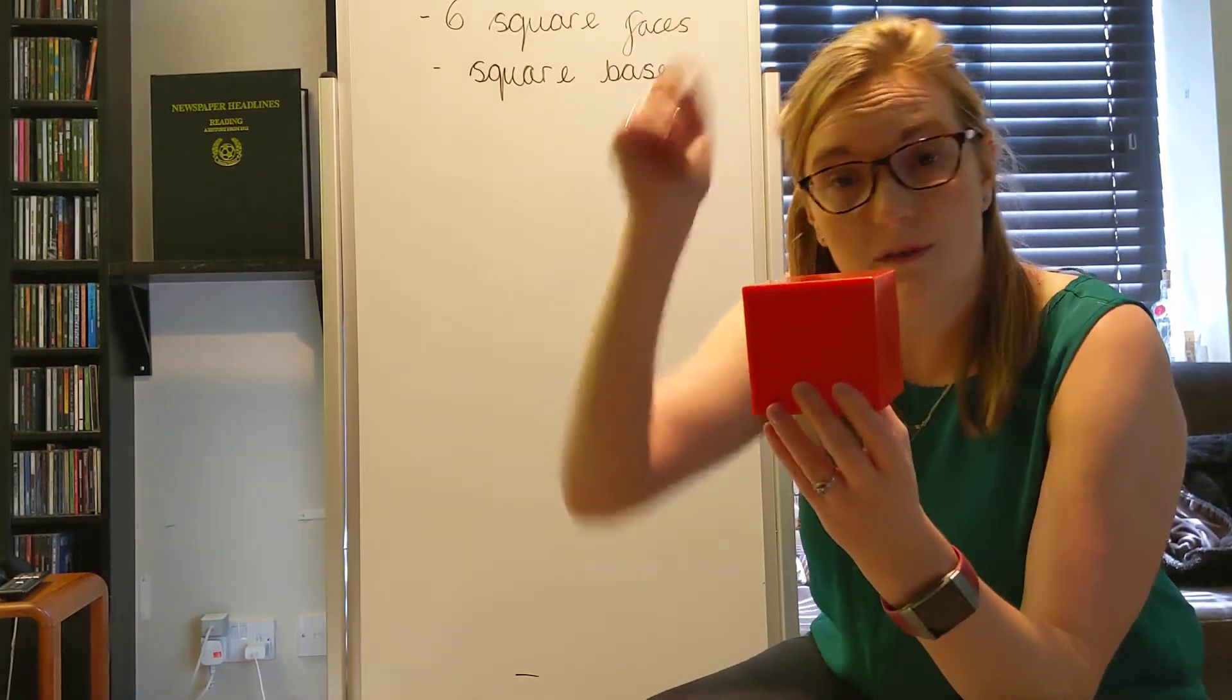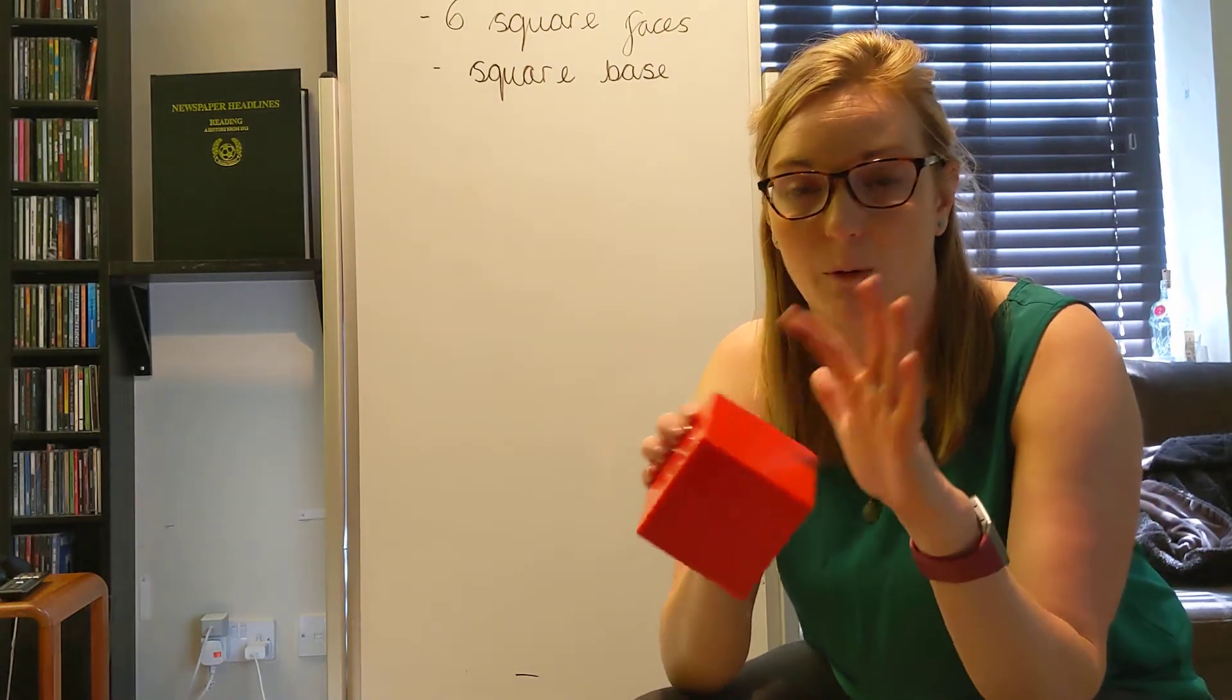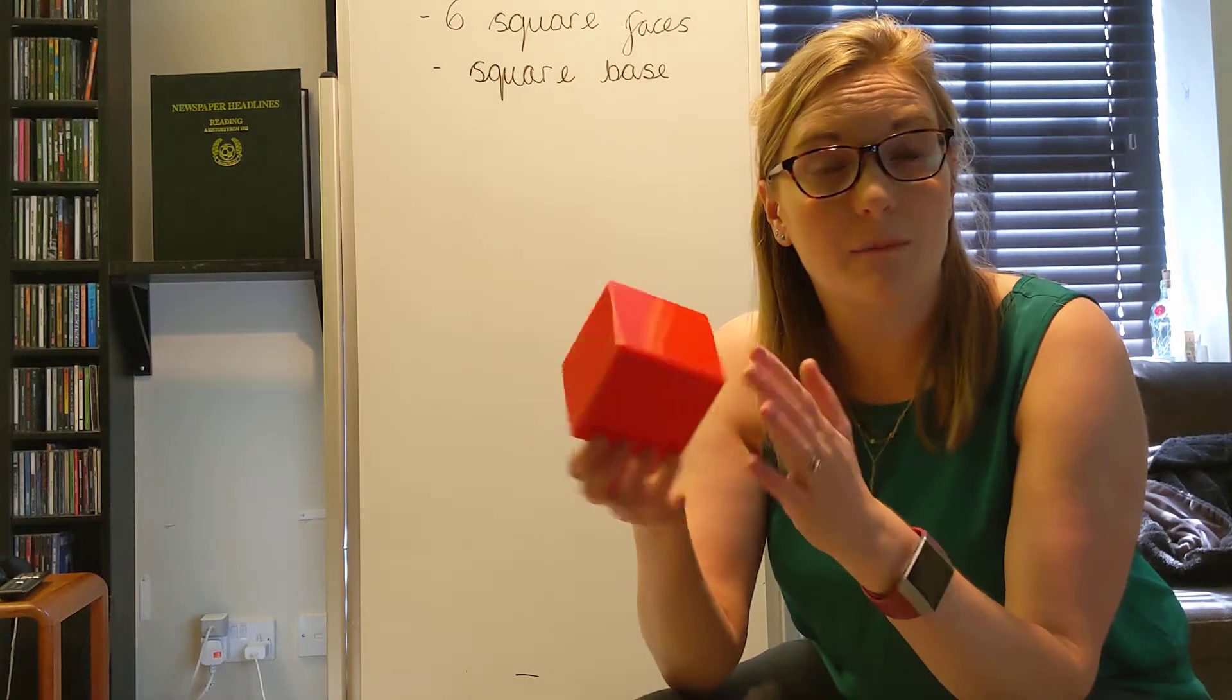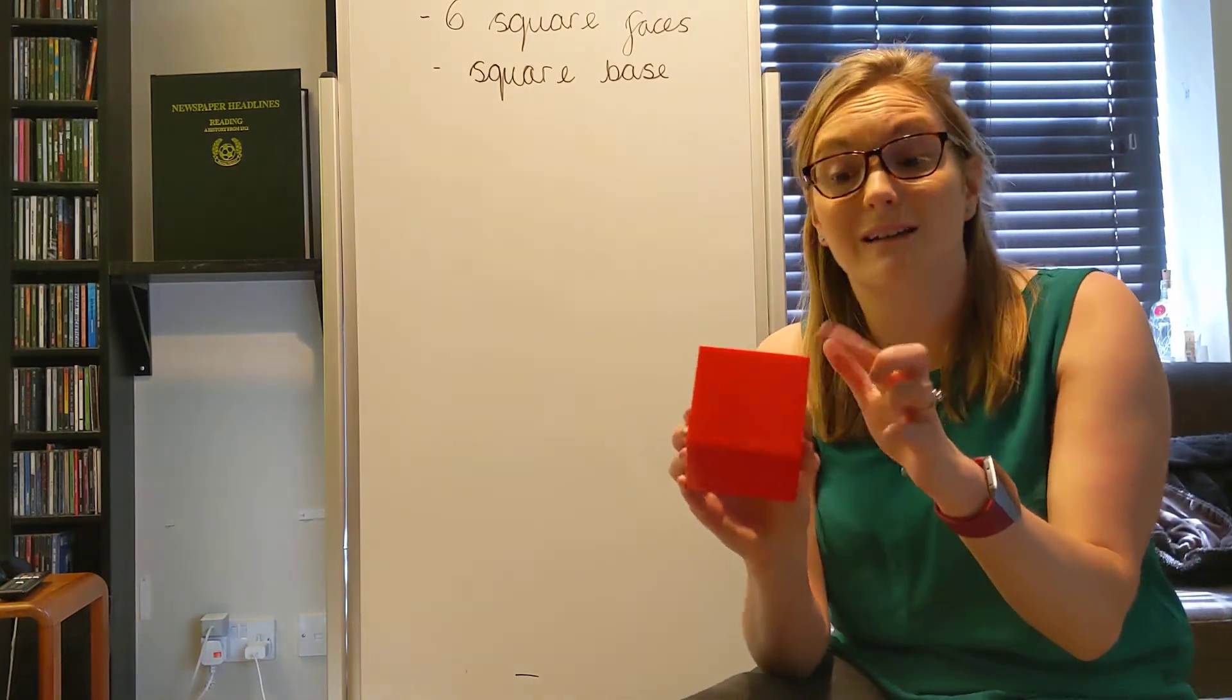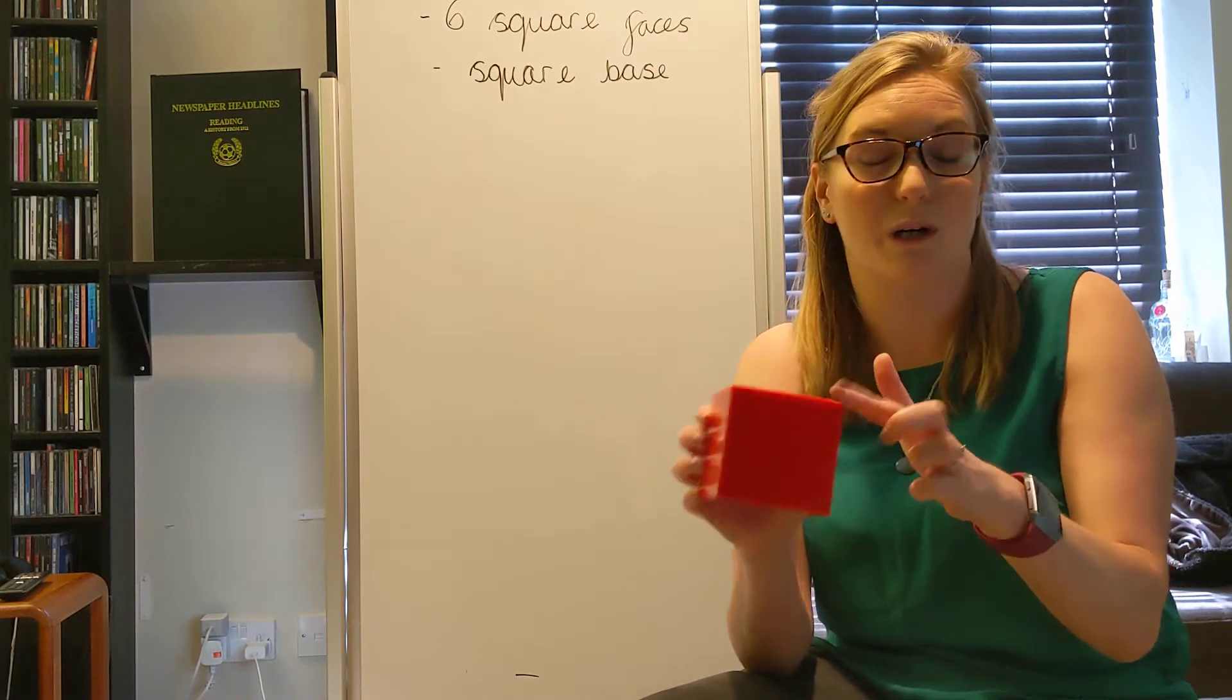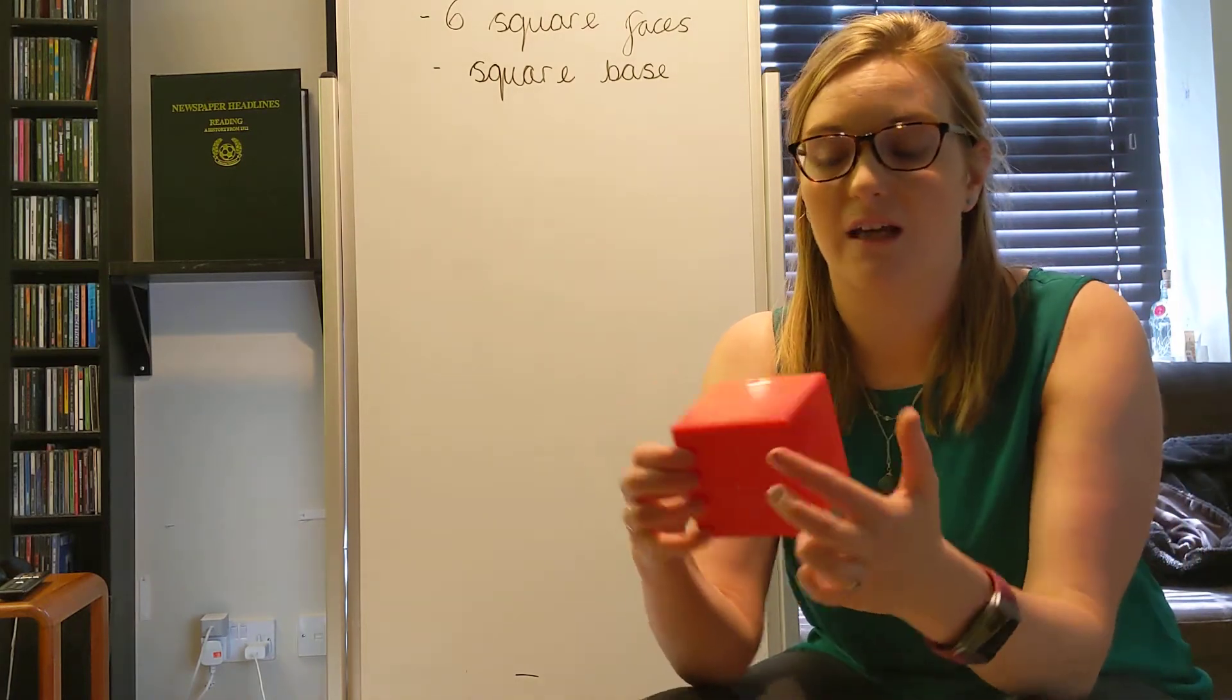Okay, so we've done the faces and we've done what the base of it is. There's no pointy bits at the top so there's no apex on this but we can talk about these pointy bits here. Can you remember the mathematical name for them? Well done. If one is a vertex, if there's more than one it's called vertices.